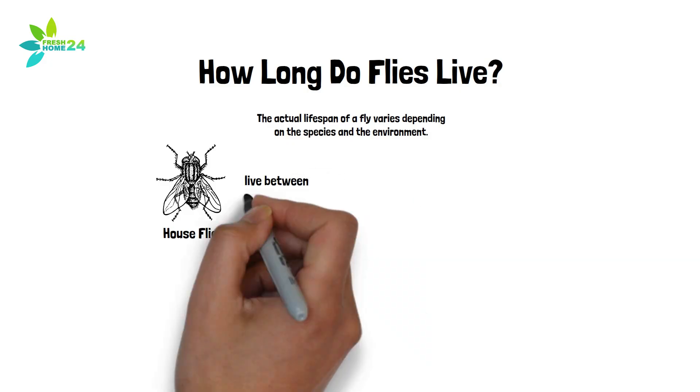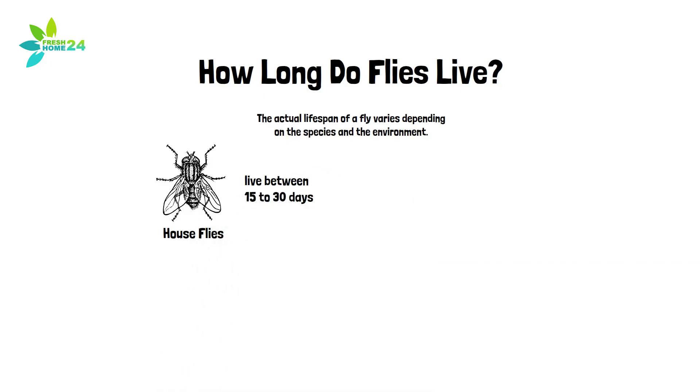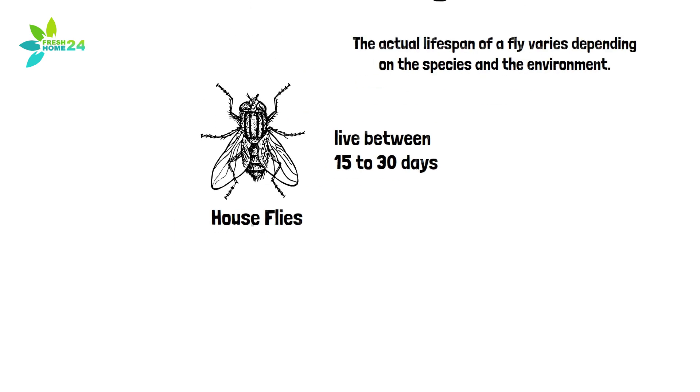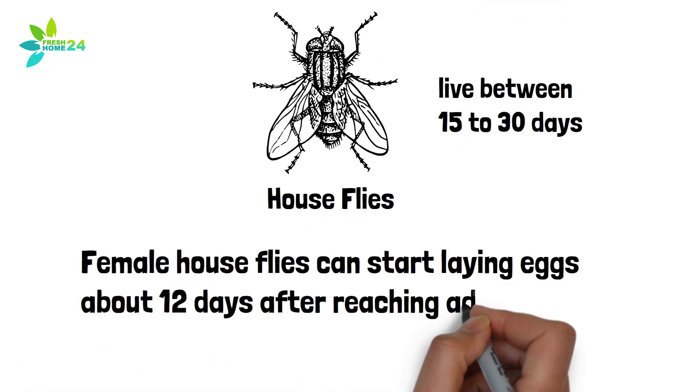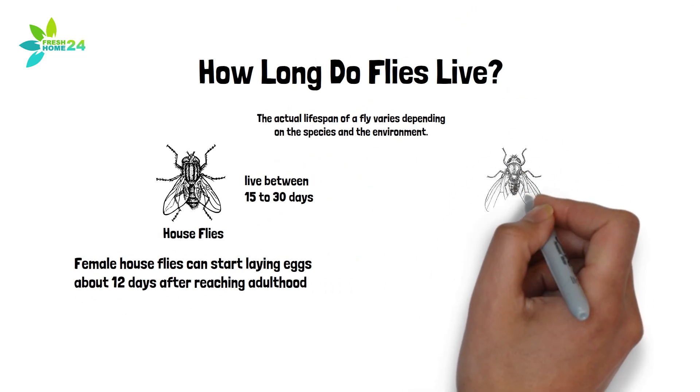House Flies. These flies typically live between 15 to 30 days. In comfortable indoor environments like warm homes or labs, they tend to live longer than flies in the wild. Female houseflies can start laying eggs about 12 days after reaching adulthood.